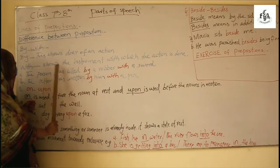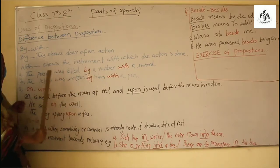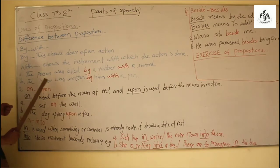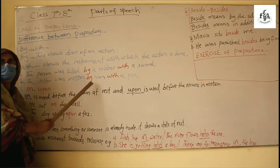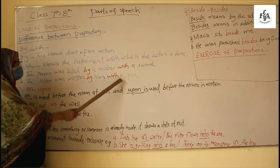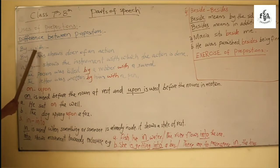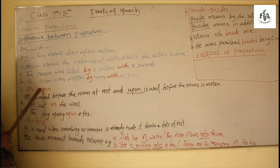For example by is for persons and with is for things or instruments. For example the person was killed by a robber with a sword. See with before instrument and by before person who killed. The robber who killed the person, he was killed by a robber. Second sentence, see the letter was written by him with a pen. See with shows instrument, by shows person. So this is the difference of by and with which have almost same meaning.